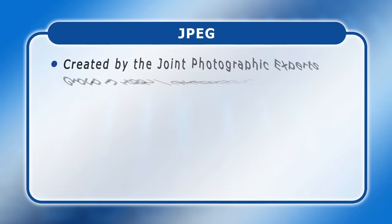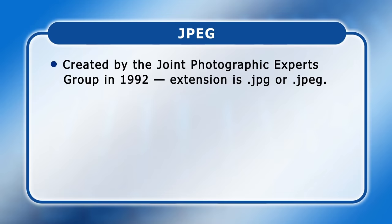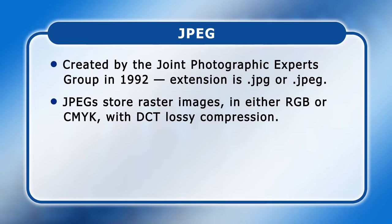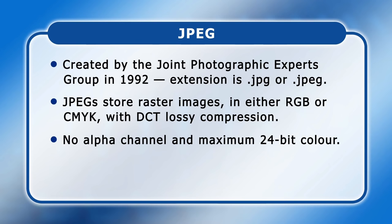Right, let's now turn to individual image file formats, the most common of which is JPEG. This was created by the Joint Photographic Experts Group in 1992 and can have the file extension JPG or JPEG. JPEGs store raster images in either an RGB or CMYK colour space with DCT lossy compression. However, an alpha channel cannot be included and bit depth is limited to 8 BPC or 24-bit colour. JPEG files can be captured by most cameras and phones and can be read by almost all digital imaging software. JPEG is therefore a solid choice for saving and sharing photographs, including images published on the web.